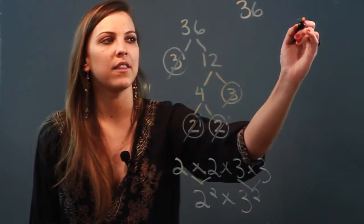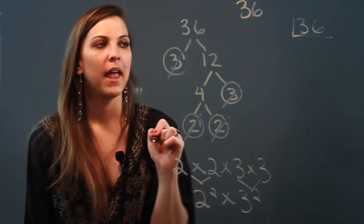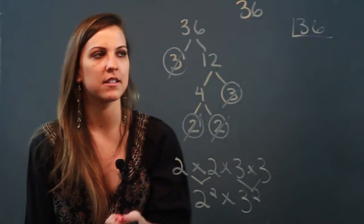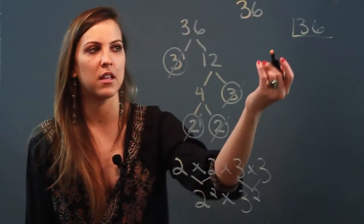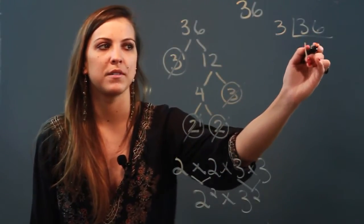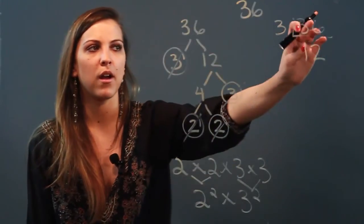I take the number 36 and I'm going to draw an upside down division bar, and I'm thinking about a prime number that I know goes into 36. One that comes to mind for me is the number 3, and 3 goes into 36 twelve times.